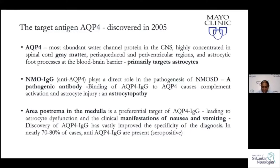Apart from the acetylcholine receptor antibody in myasthenia gravis — the prototype autoimmune disorder with a pathogenic antibody — NMOSD is the second condition where the antibody is thought to be pathogenic, potentially playing a vital role in causing the disease. Different areas of the brain have astrocyte foot processes with these water channels. The area postrema in the medulla is a preferred target, leading to astrocyte dysfunction, which clinically manifests as area postrema syndrome with intractable nausea and vomiting.